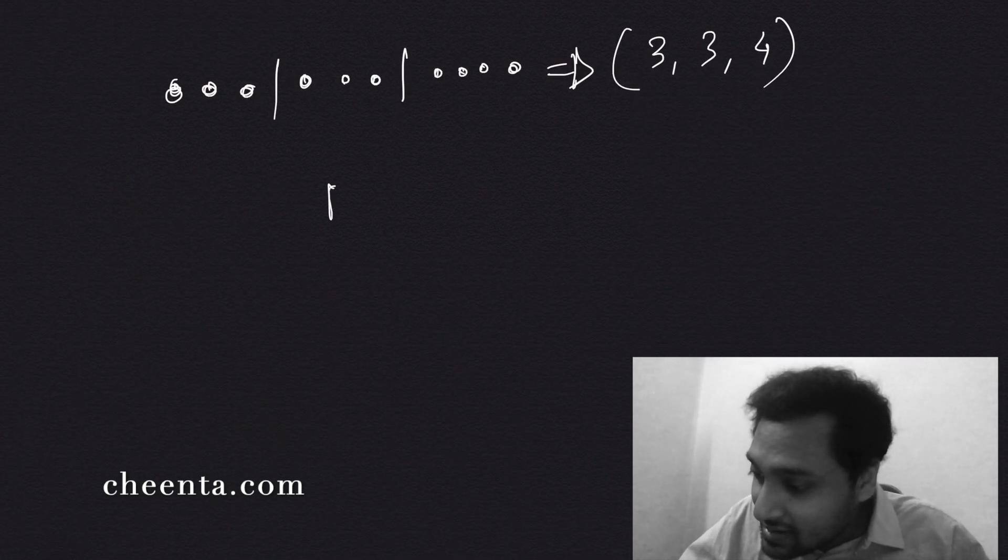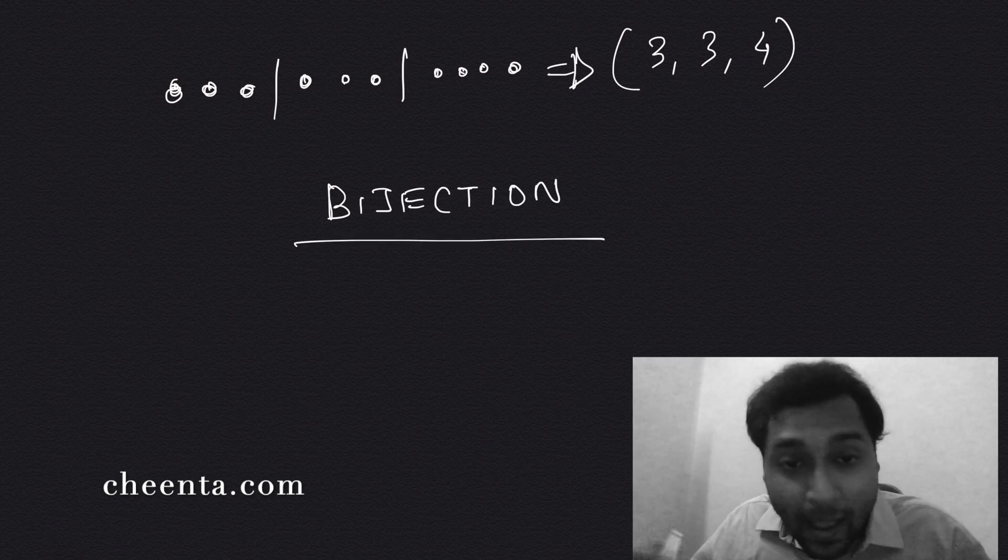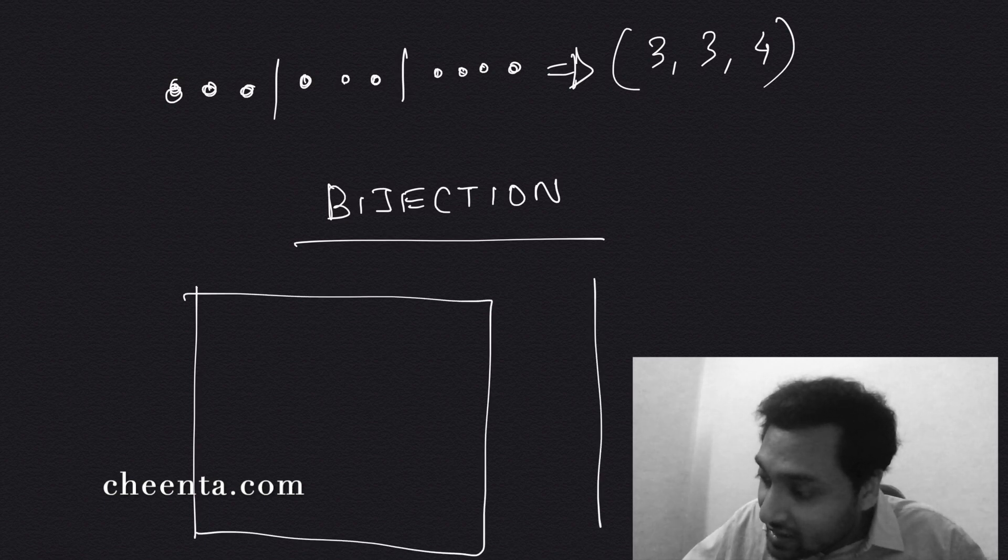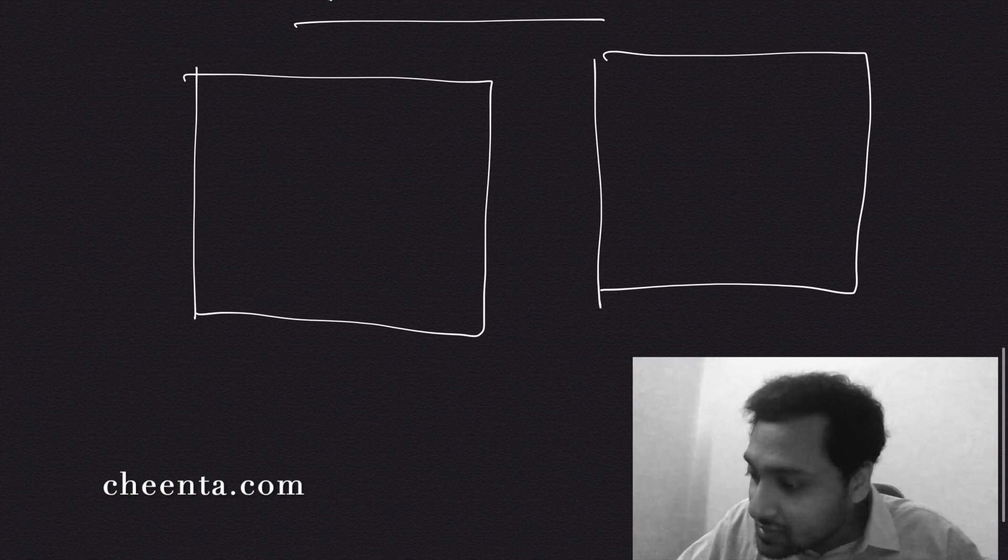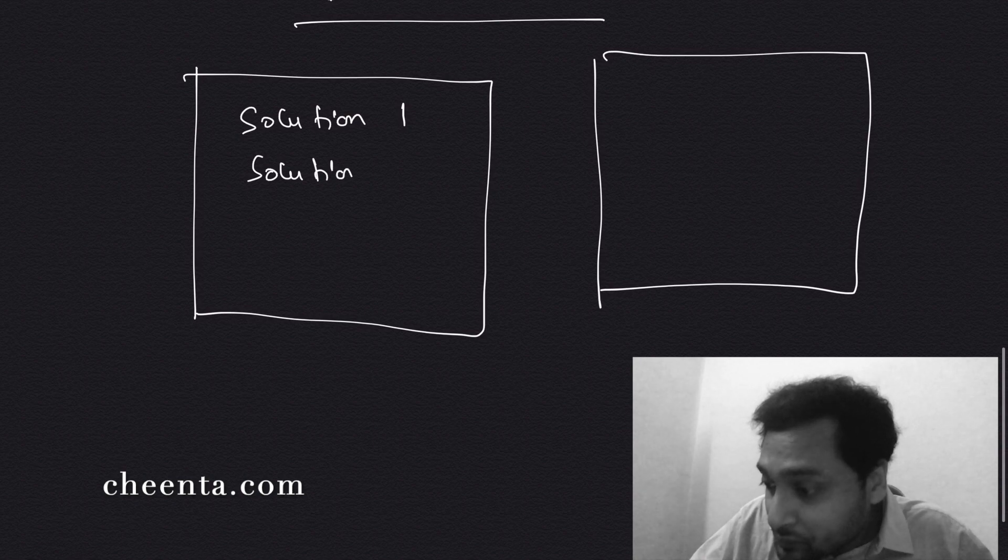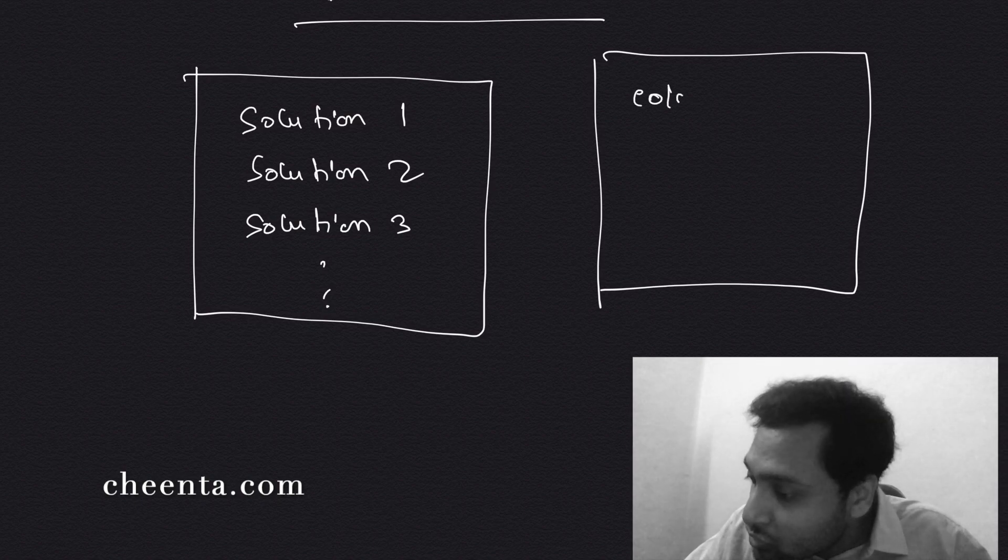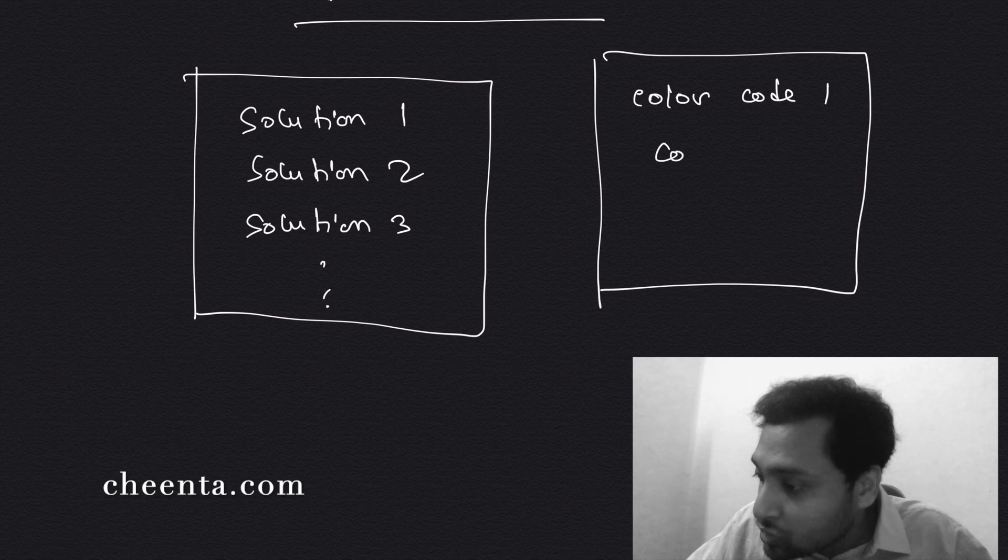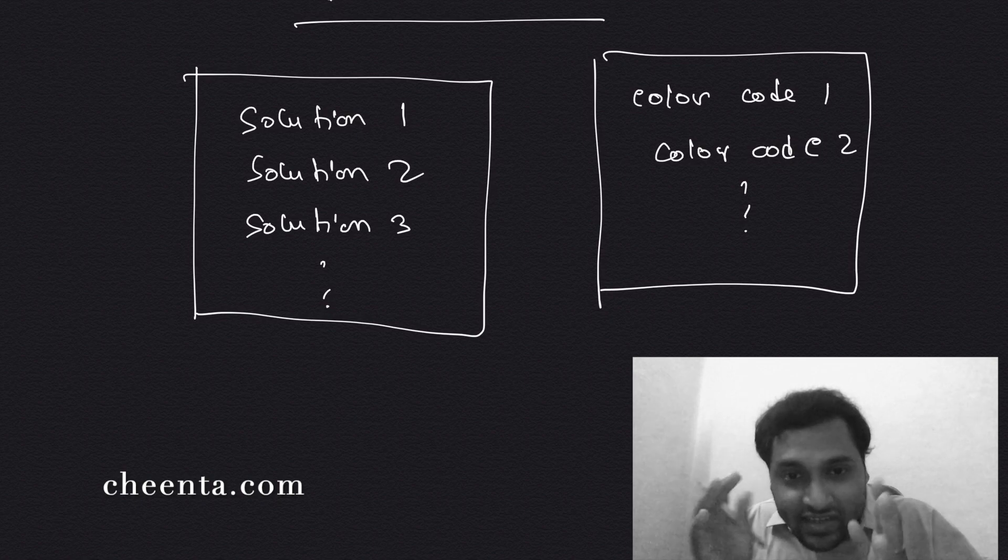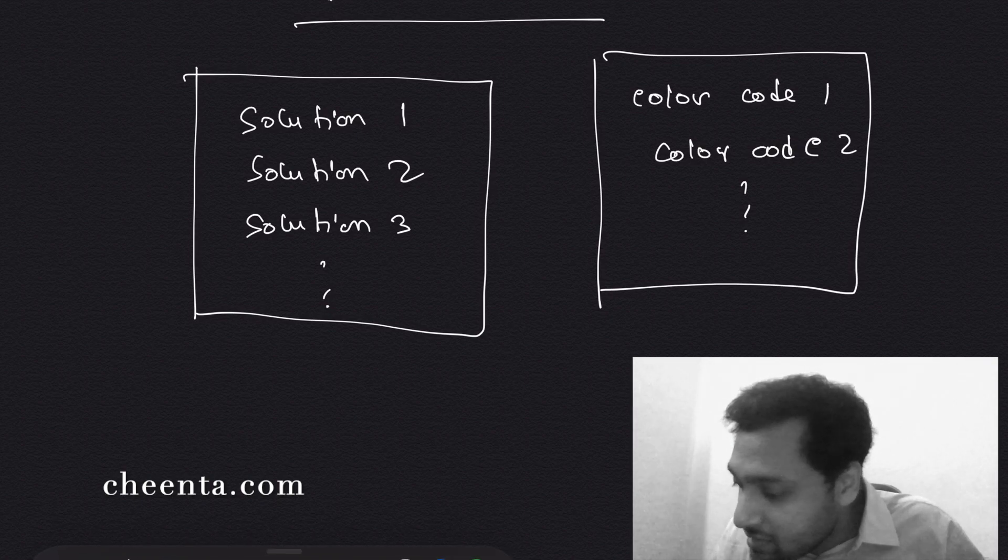So that's what I am going to write here. There is a bijection, that is a one-to-one onto mapping between the collection of color codes and the collection of solutions. So this is suppose solution 1, solution 2, solution 3, and so on. There will be many more. And there is a color code 1, color code 2, etc.